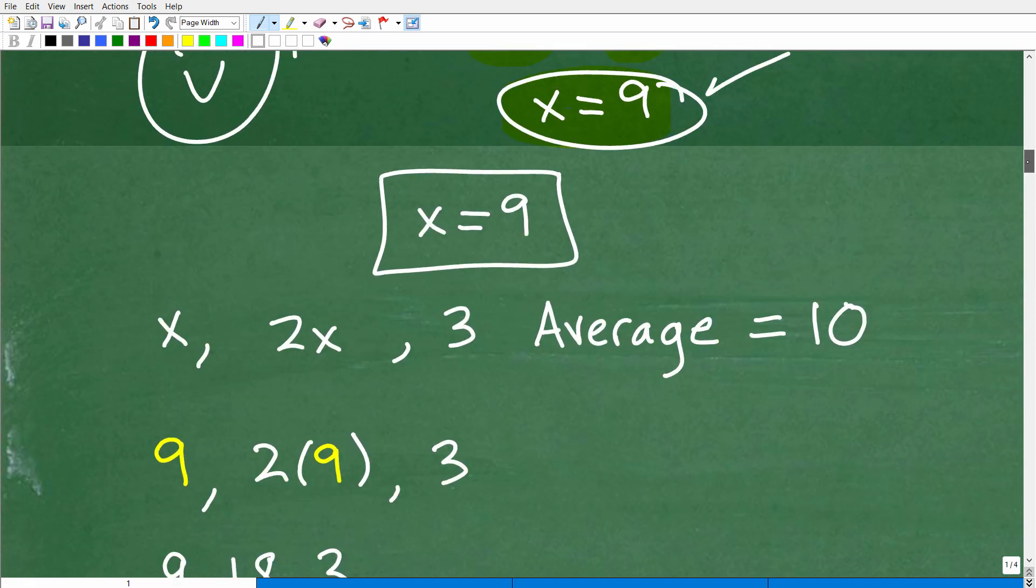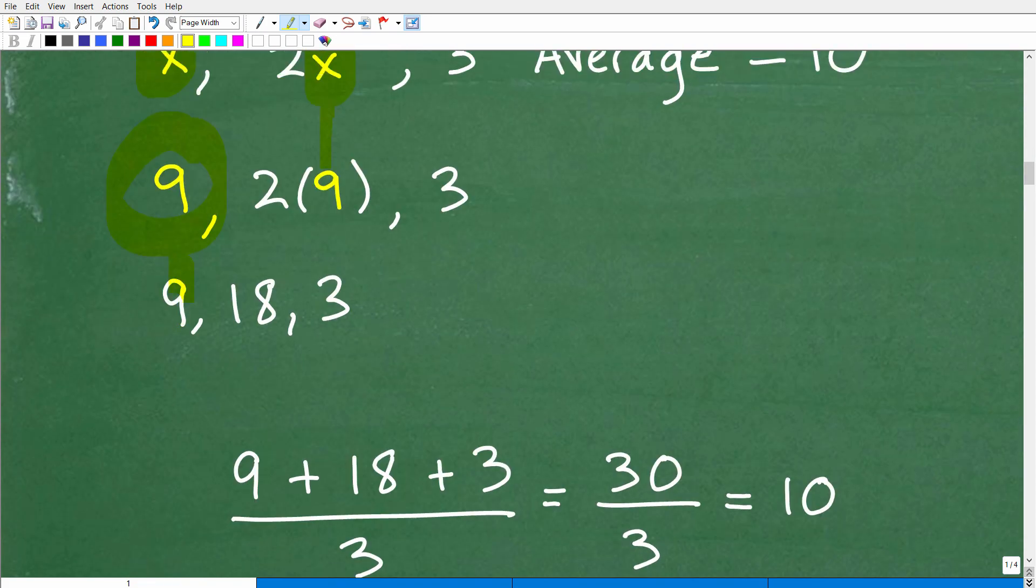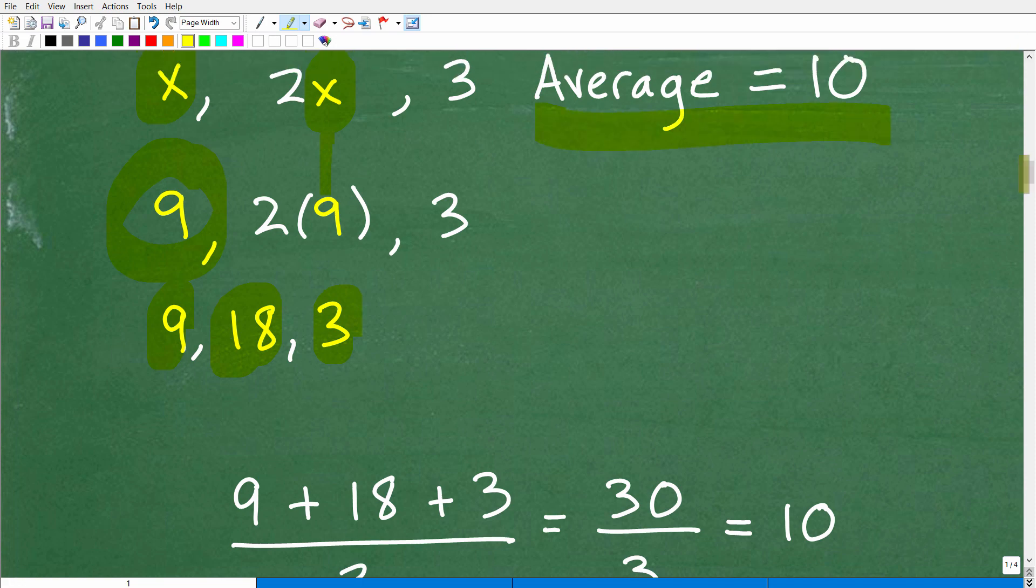So let's go ahead and answer the question. See, even myself, I got a little bit too energetic there and I didn't follow through, but let's continue on. So x is equal to 9, but I want to know the numbers, right? So remember the numbers were x, 2x and 3. So x, we just solved was equal to 9. So x is 9. So one number is 9. 2x is the other number. So that's 2 times 9. So that's going to be 18. So we have 9, twice that number of course is 18 and 3. So 9, 18 and 3 is the numbers.